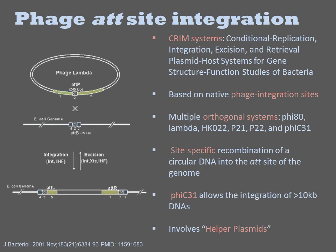The integration chemistry requires the use of helper plasmids to transiently produce the phage-derived integrase. Helper plasmids are typically constructed from temperature-sensitive origins of replication, and thus transformed bacteria can be cured by growth at elevated temperatures.